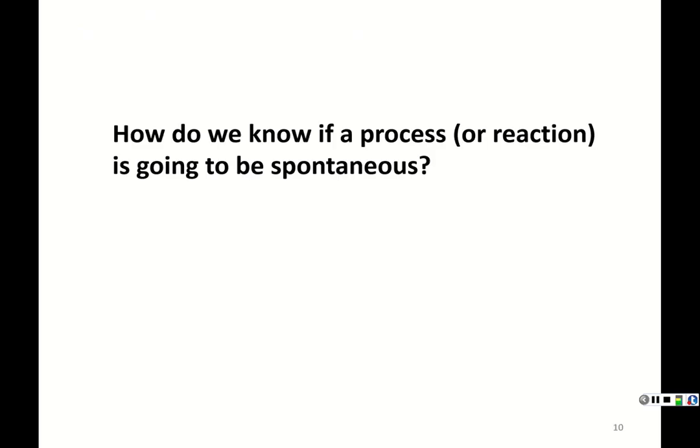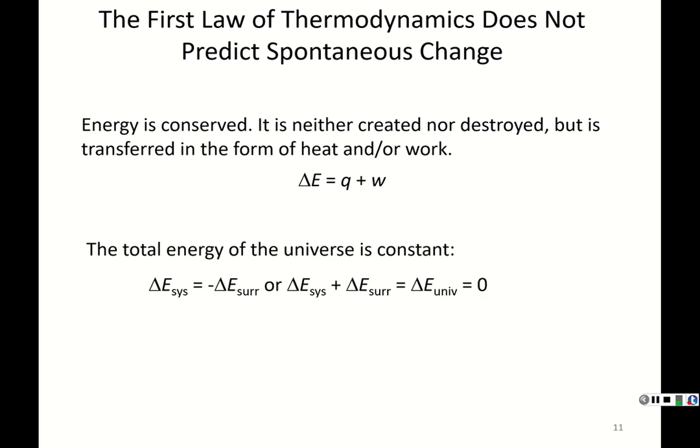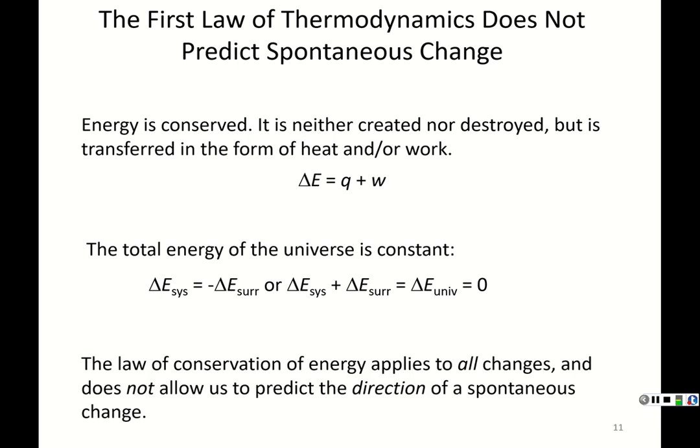How do we know if a chemical reaction is spontaneous? Does the first law of thermodynamics predict spontaneity? It does not. The first law states that energy is conserved — neither created nor destroyed, but transferred as heat and work — and the total energy of the universe is constant. This applies to all changes, spontaneous or not. The change in energy of the universe is always zero, so it doesn't allow us to predict the direction of a spontaneous change.